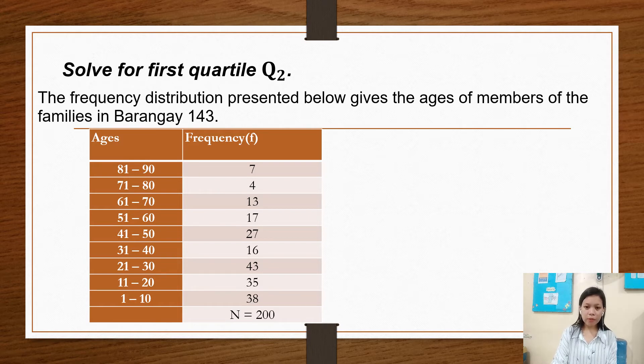So here, the ages are 81 to 90, 71 to 80, 61 to 70, 51 to 60, 41 to 50, 31 to 40, 21 to 30, 11 to 20, and 1 to 10, which are the age ranges.